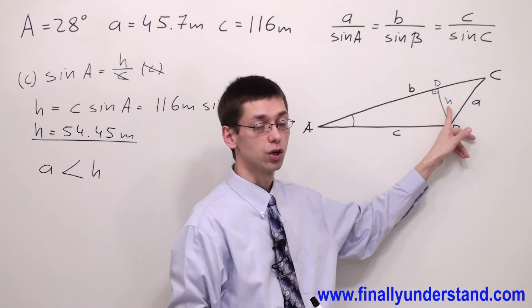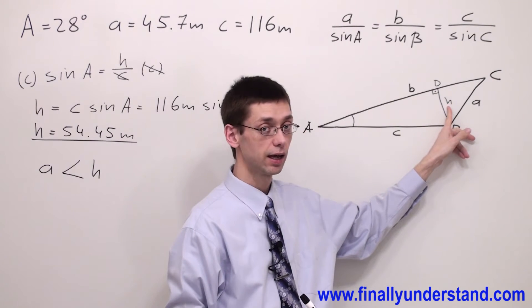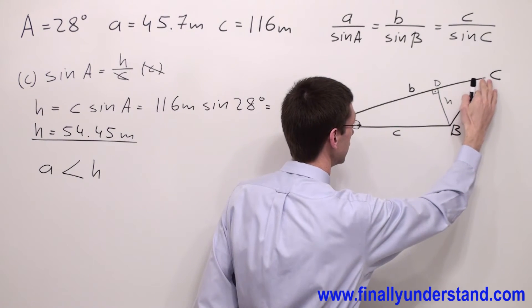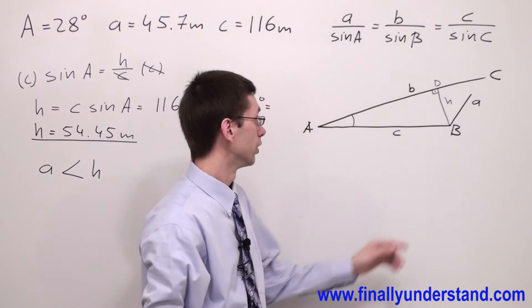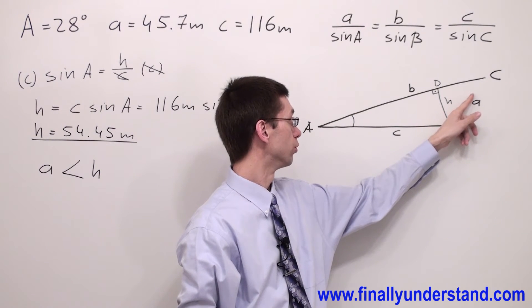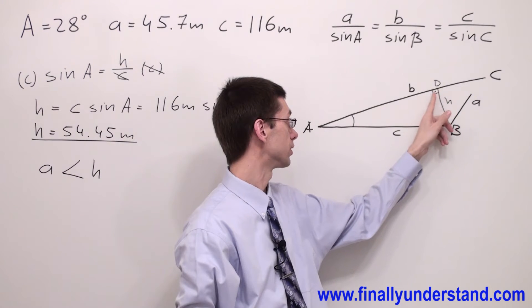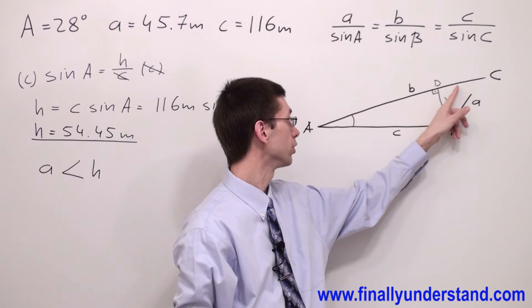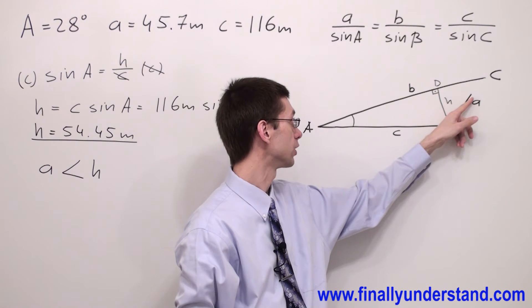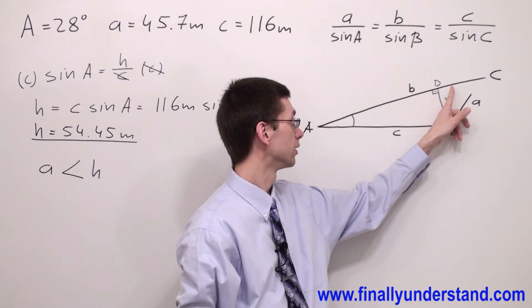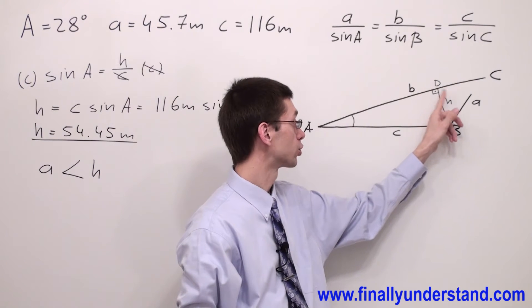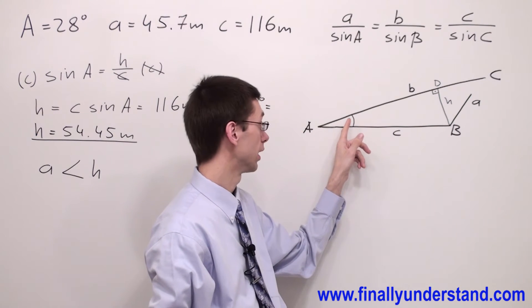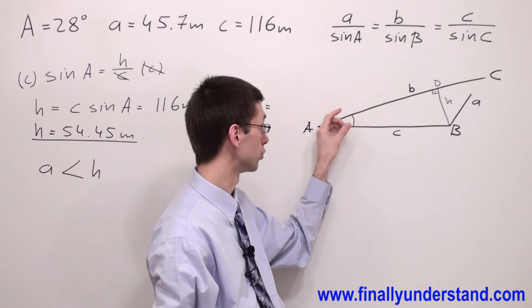H is longer than side A, so it means that side A is shorter than H. So it means that if I'm going to move side A, let's say in this direction, counterclockwise, I'm never going to reach the point where this side is going to touch side B. So it means that I cannot make the triangle. Remember, you cannot change the angle.